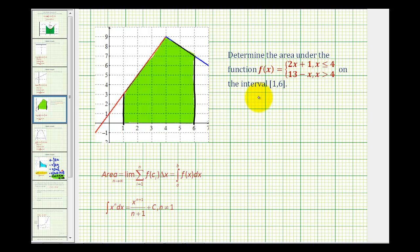This problem is a little bit different than the previous examples because the area is bounded by the red line from one to four, and then from four to six that's bounded by the blue line. But since the function is non-negative on the interval from one to six, we can still use definite integrals to determine this area, but now we'll have to use two different definite integrals to determine the total area.